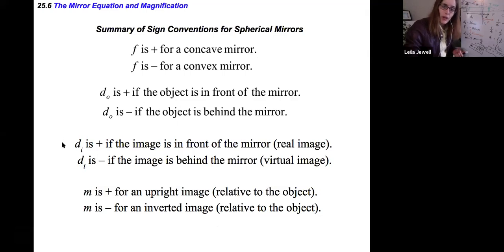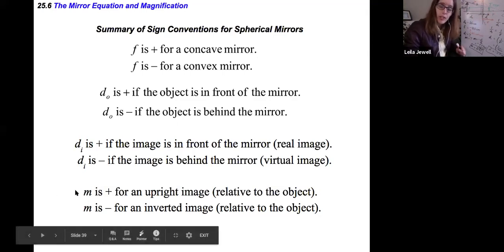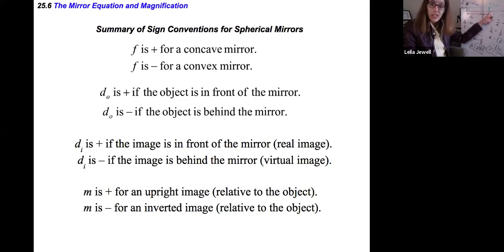d_i is positive if the image is in front of the mirror, a real image. It's negative if it's behind the mirror, a virtual image. Finally, m is positive for an upright image, which is what we got here. We had a positive magnification, but it's less than one because it's shrunk in size. It's negative for an inverted image, relative to the object.